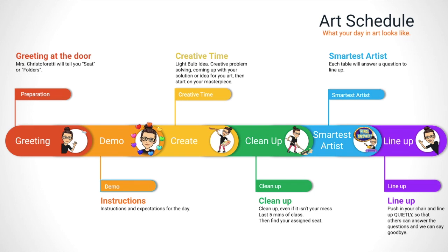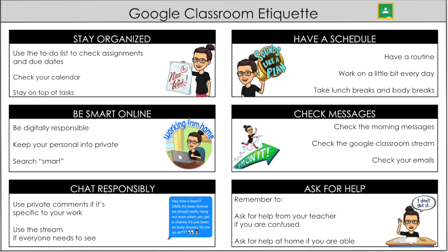After everyone is sitting quietly, we will play the smartest artist game. Mrs. Christofredi will say 'it's time for' and the class will repeat 'the smartest artist.' Each table will get to answer a question, and if they answer correctly as a table, they will be able to line up. Friends in line need to be quiet so other tables can hear the questions. If a table answers wrong, the line may be asked to answer correctly. Once everyone's chairs are pushed in and we're in line quietly, we can answer questions, say our goodbyes, and if there's time, play a game.